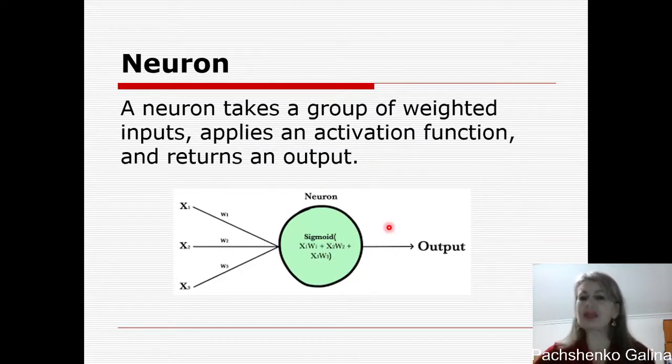A neuron takes a group of weighted inputs, applies an activation function and returns the output. So here we can see three inputs x1, x2 and x3, and three weights, each weight for its input.